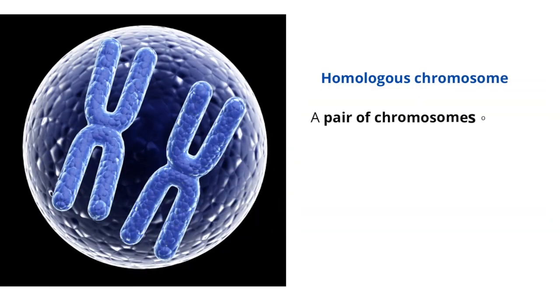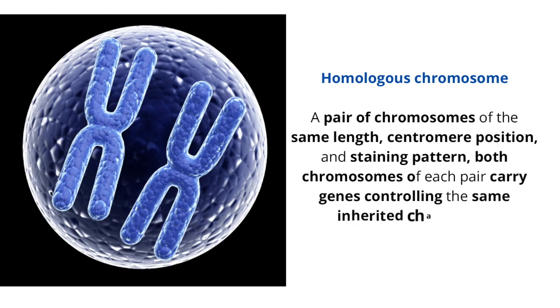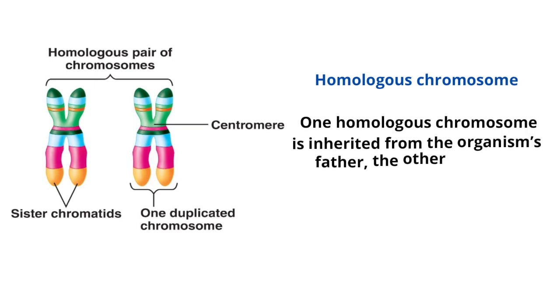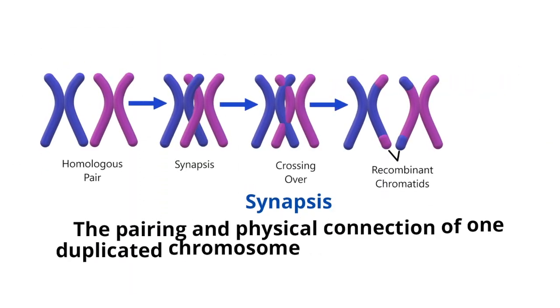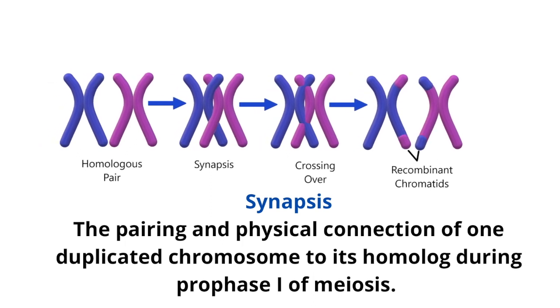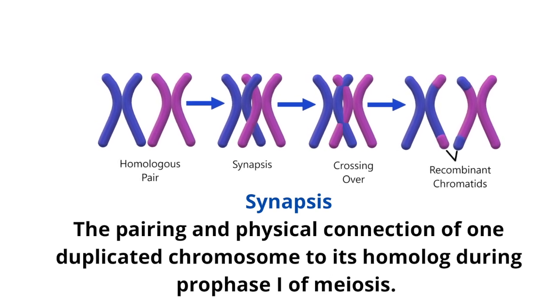Homologous chromosome: a pair of chromosomes of the same length, centromere position, and staining pattern. Both chromosomes of each pair carry genes controlling the same inherited characters. One homologous chromosome is inherited from the organism's father, the other from the mother. Synapsis: the pairing and physical connection of one duplicated chromosome to each homolog during prophase one of meiosis.